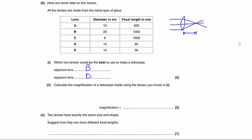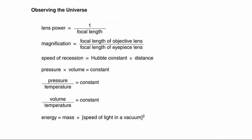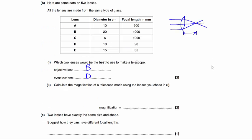Part two asks us to calculate the magnification of a telescope made using the lenses that we've just chosen in part one. We look at our formula sheet. We find the equation here for magnification is the focal length of the objective lens divided by the focal length of the eyepiece lens. So the focal length of our objective lens, that's lens B, is 1000mm.